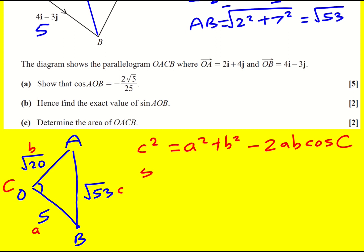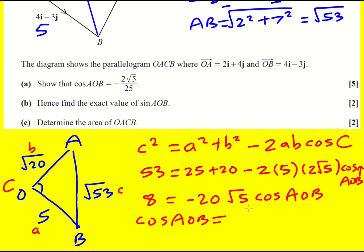So root 53 squared is going to be 53. That's why it's actually good to leave it as root 20, because I'm going to get 25 plus 20, and then minus 2 times 5 times b. Now for this one I'm going to write it as 2 root 5, because I know in my final answer I've got a root 5, so I'm just deciding when to use which one. And then it's going to be cos AOB. Sorry, I can't quite fit that in. This here is 45, so I'm going to get 8 equals minus 20 root 5 cos AOB. So cos AOB is going to be 8 divided by minus 20 root 5. You can actually put the minus to the left, and we're nearly there.